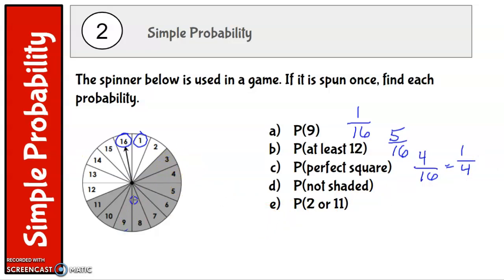Probability that it is not shaded. So there are 1, 2, 3, 4, 5, 6, 7 favorable outcomes that are not shaded out of 16.